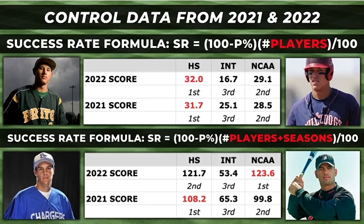You can see the formula I used for both five-plus players and the combination of five-plus players and seasons. Although high school draftees only had 36 five-plus WAR players and 87 five-plus total WAR seasons, they only accounted for 11% of players acquired in 2022 and 12% in 2021, giving them the top score of 32 and 31.7 over the last two years. College hitters held the second highest success rate scores over 2021 and 2022, with international players finishing in third place. In the combined category, college hitters put up the highest score in 2022, while high school hitters took the crown in 2021.